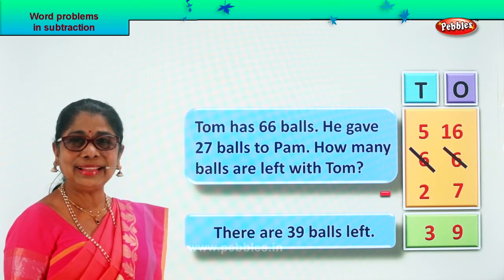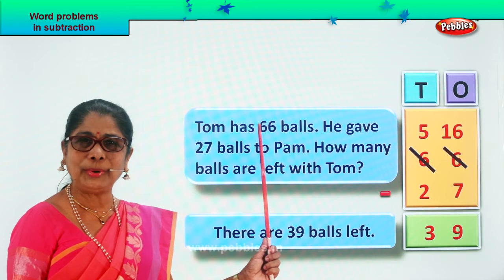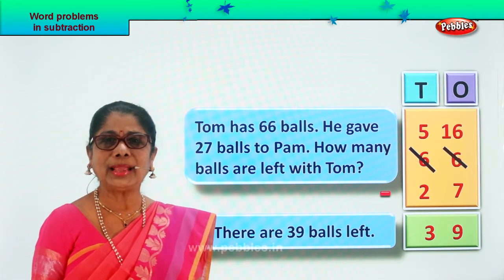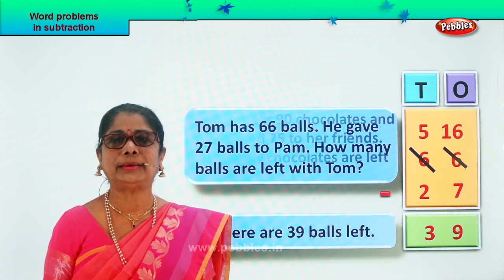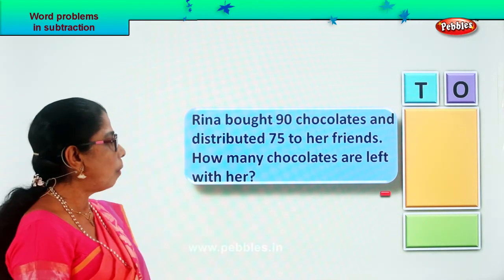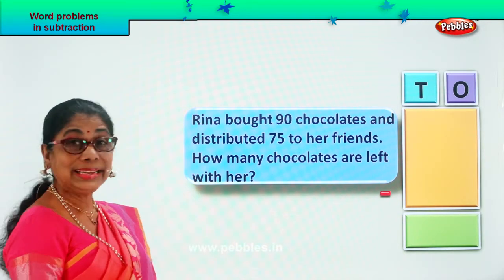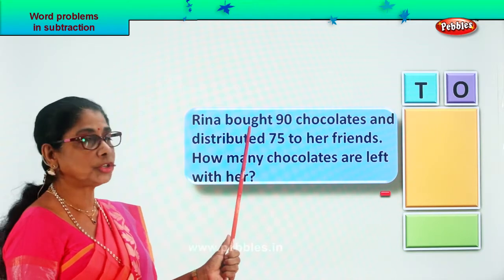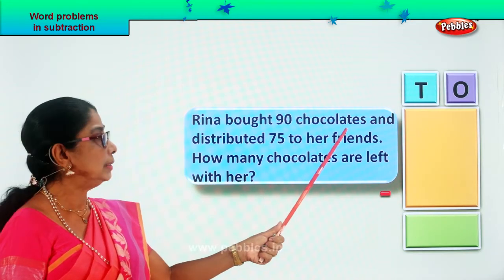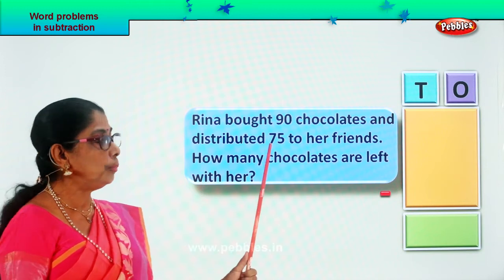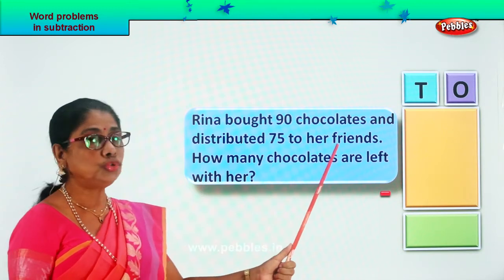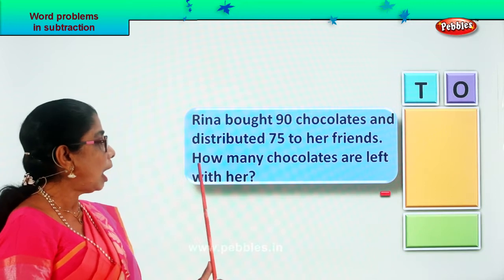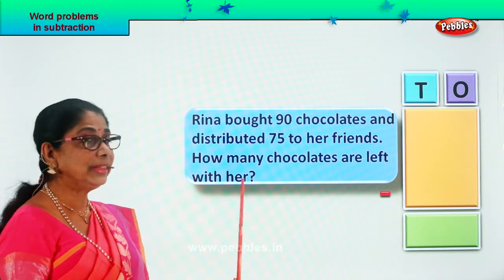So you got the answer? You enjoyed doing the word problem? Good. Shall we take another word problem? Here we are. Let's read the sum together. Rina bought 90 chocolates and distributed 75 to her friends. How many chocolates are left with her?